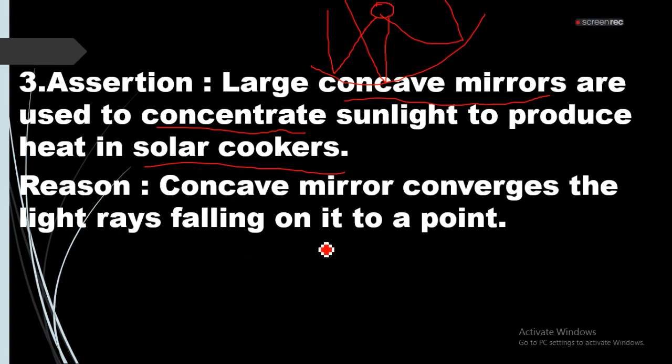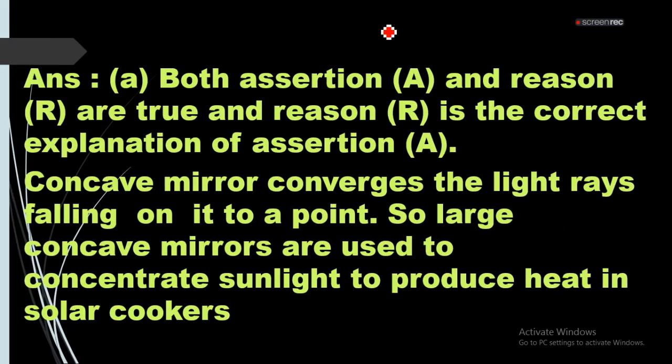Reason: Concave mirror converges the light rays falling into a point. All these rays are converged at a point. So assertion is true, reason is the correct explanation here. Both assertion and reasons are true and reason is the correct explanation.